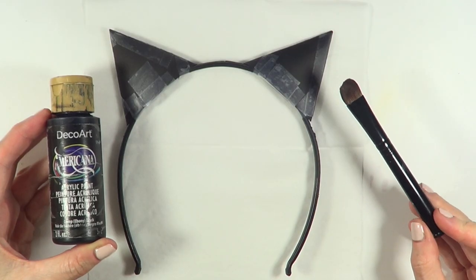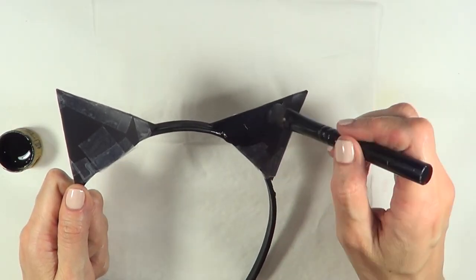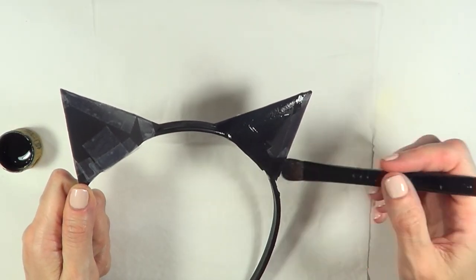I'm going to be using black acrylic paint. I'll paint it, giving it a few coats until I can't see the tape anymore.